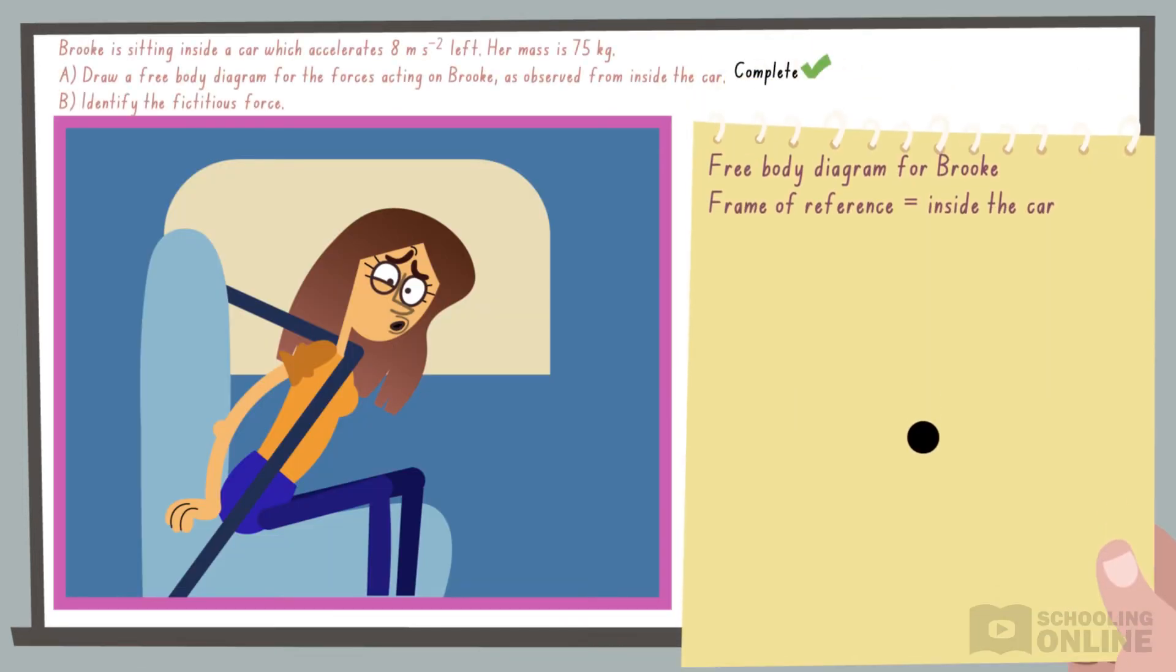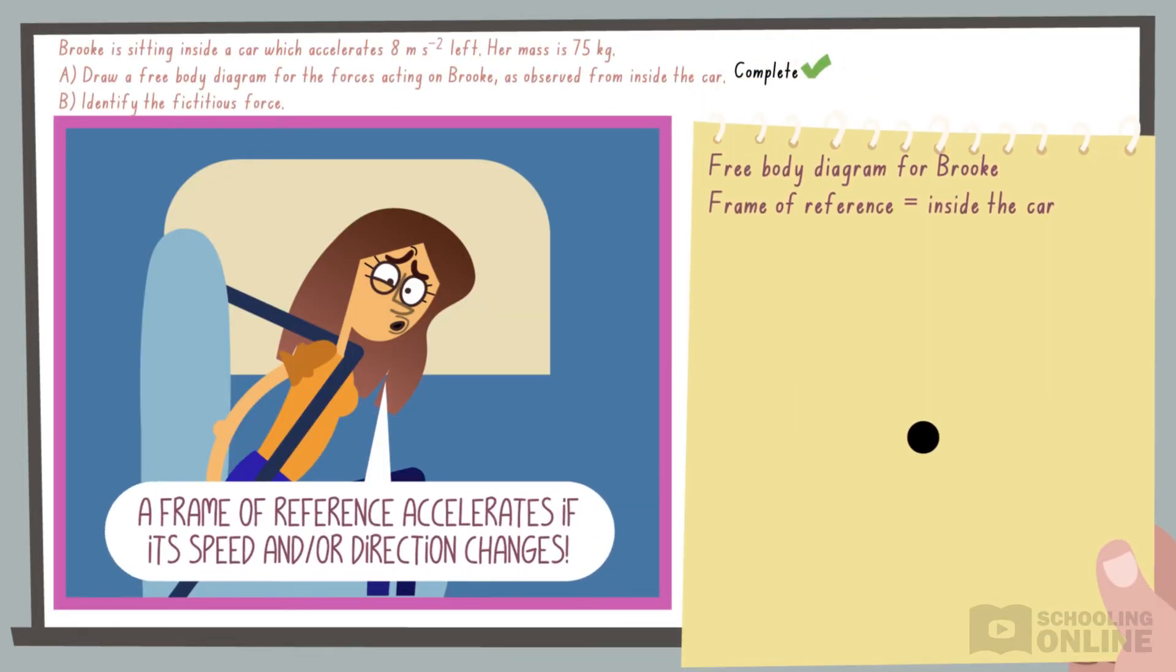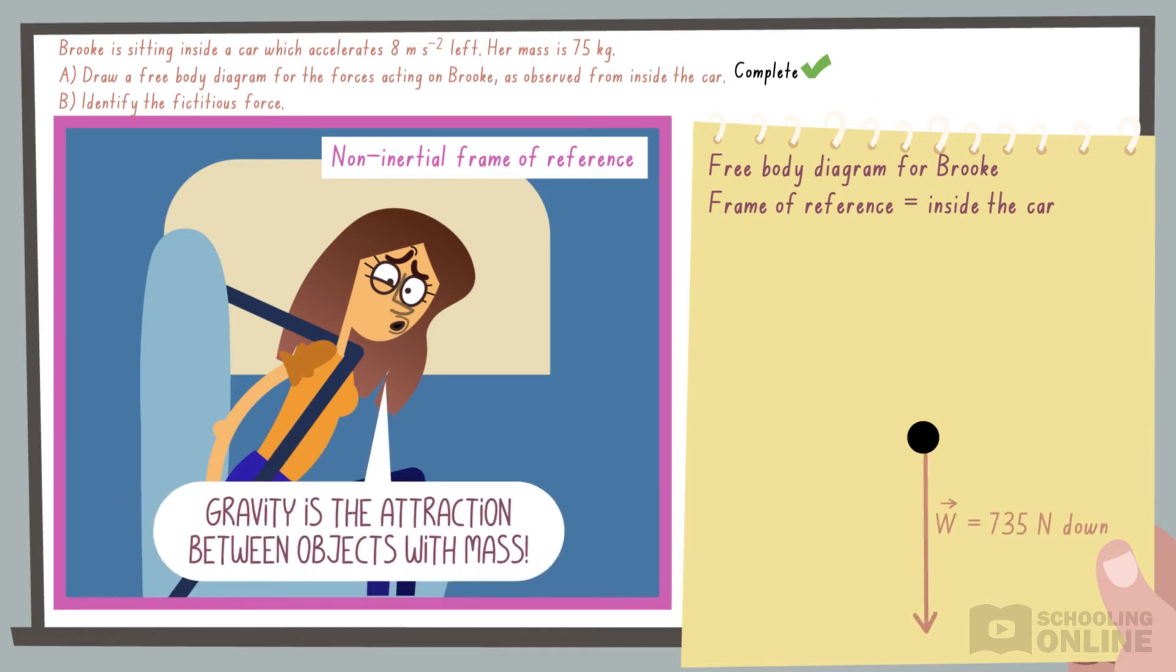Let's return to the original scenario. Since the car slows down, it is an accelerating or non-inertial frame of reference. The weight force occurs when Brooke interacts with the Earth. Since there are two objects involved, it is a real force.